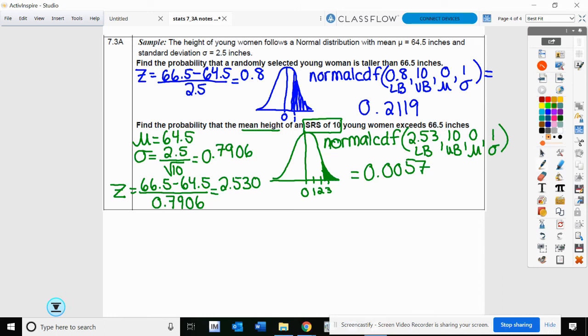So that's it for 7.3a. The next section, 7.3b, we're going to talk about what happens if your population distribution is not normal. So this all came from the fact that the population distribution was normal. What if it's not?